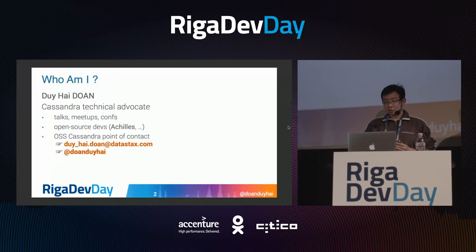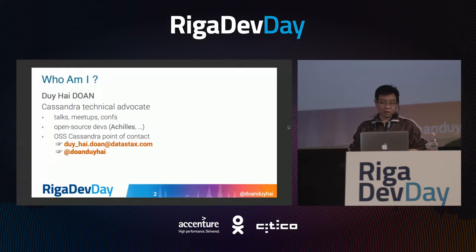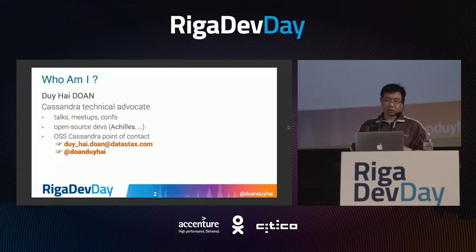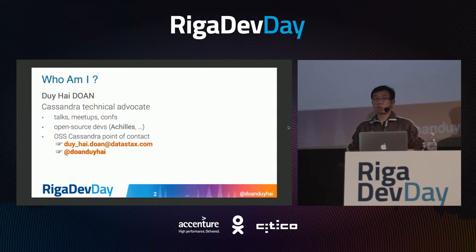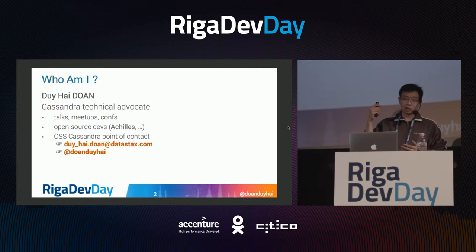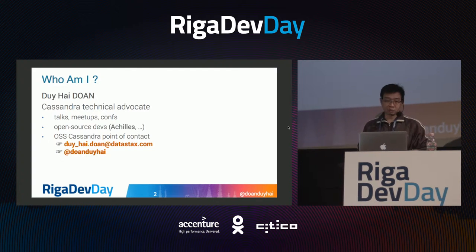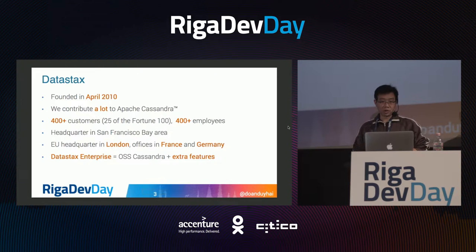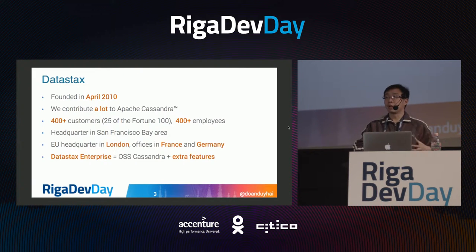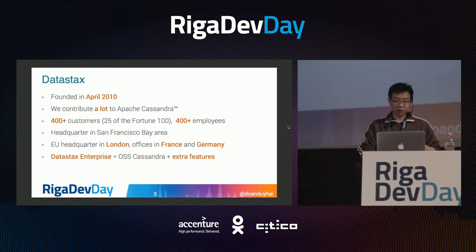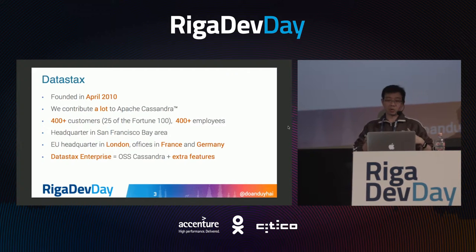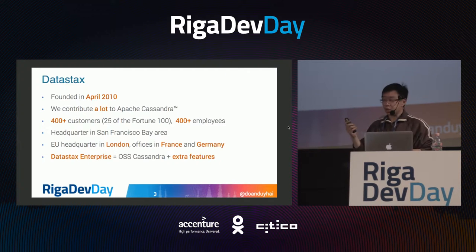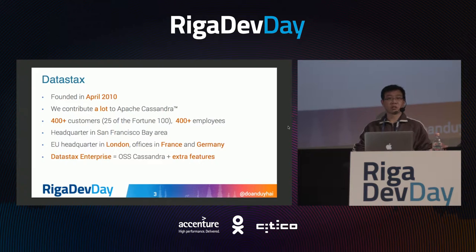Let me introduce myself. My name is Yuhei Dohan. I'm working as a technical advocate for Apache Cassandra, the open source project. My job is to help people with Cassandra. You can drop me an email or reach me on Twitter. I am working for DataStax — basically a commercial company behind Apache Cassandra. Our product is an enterprise version: you take open source Apache Cassandra, add extra features, and you have DataStax Enterprise.